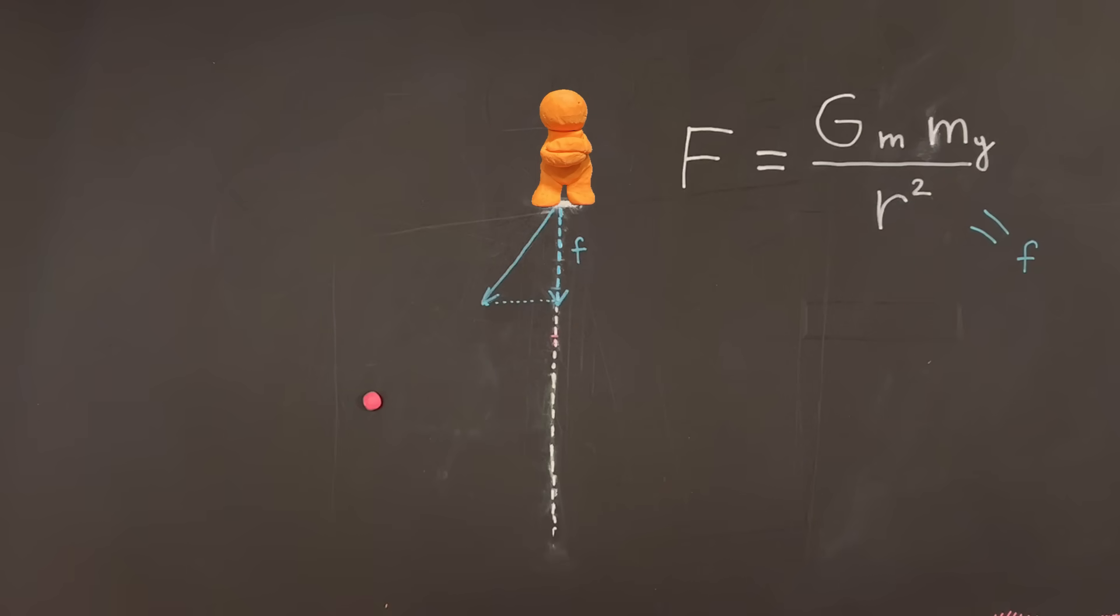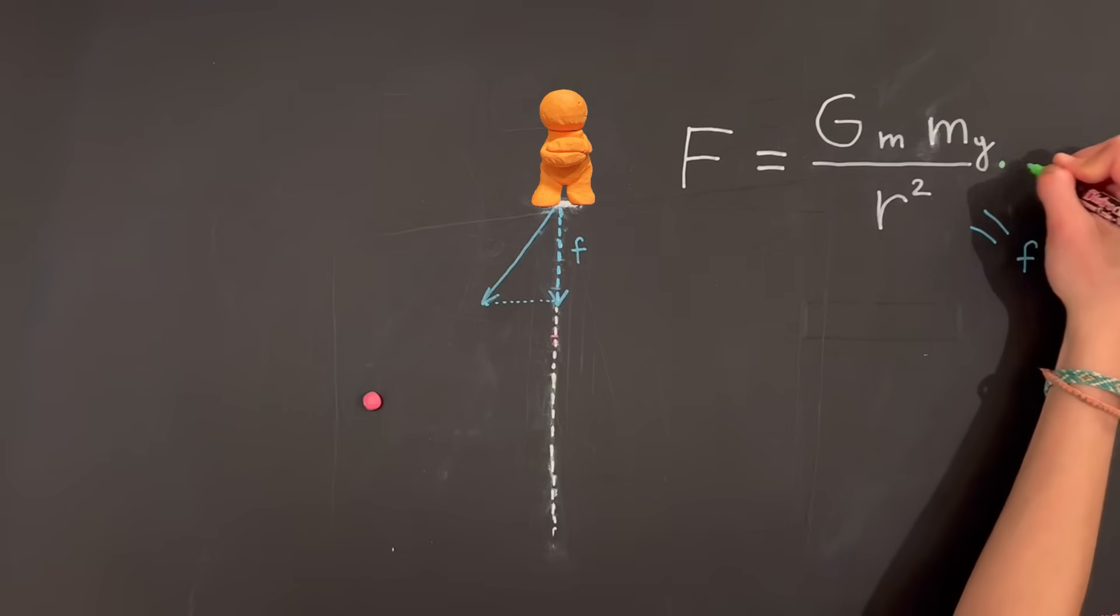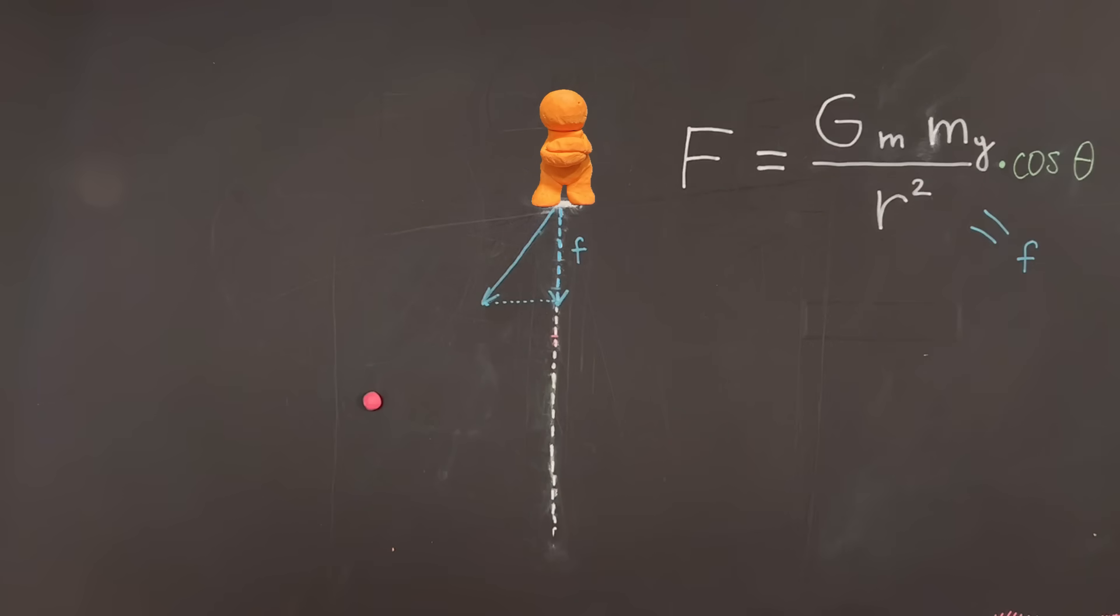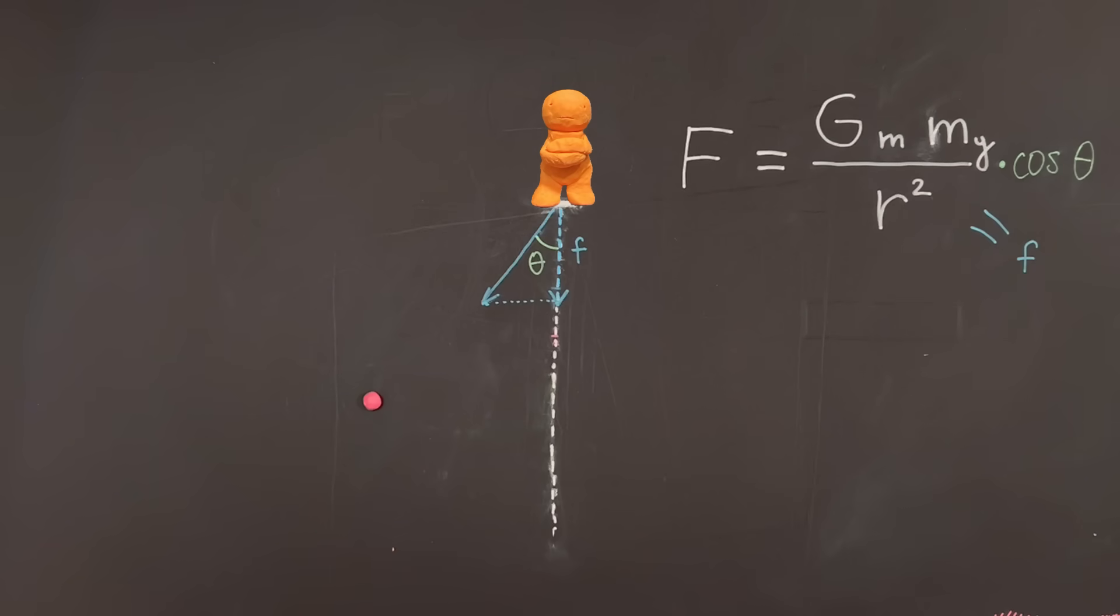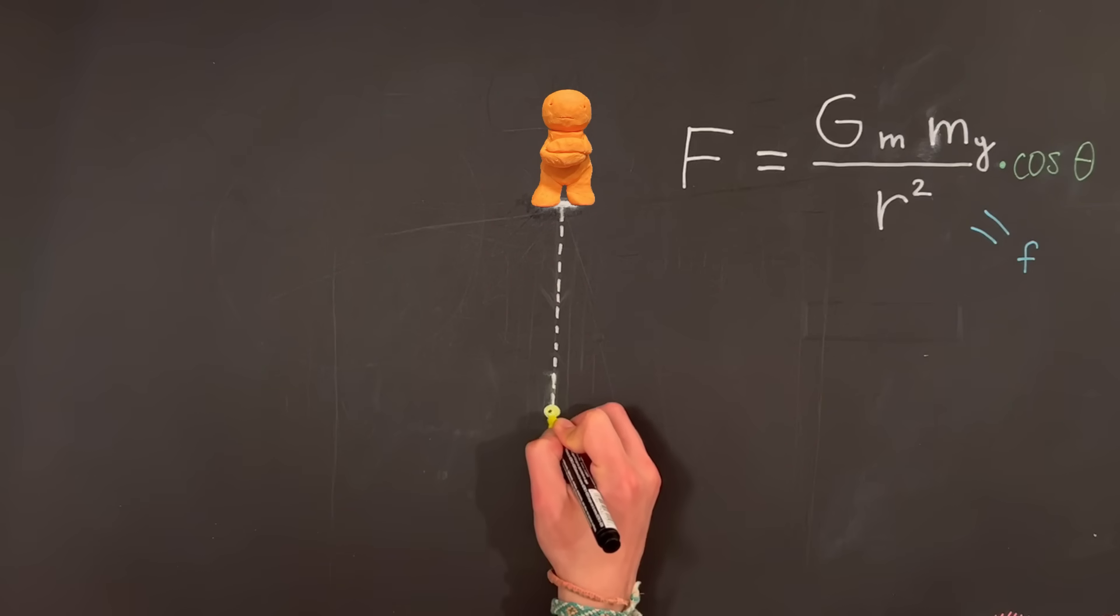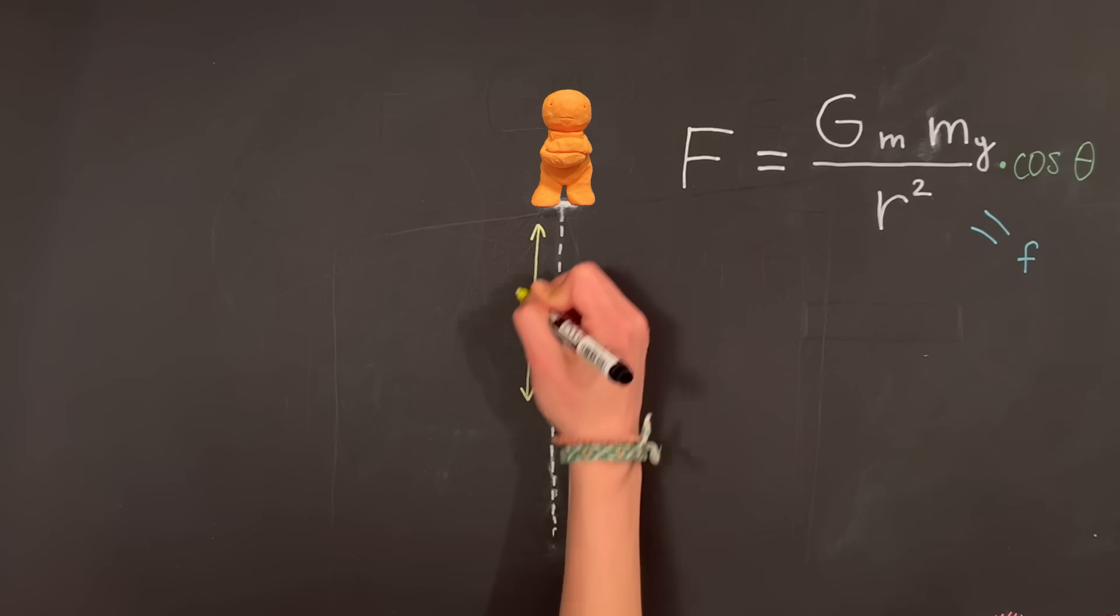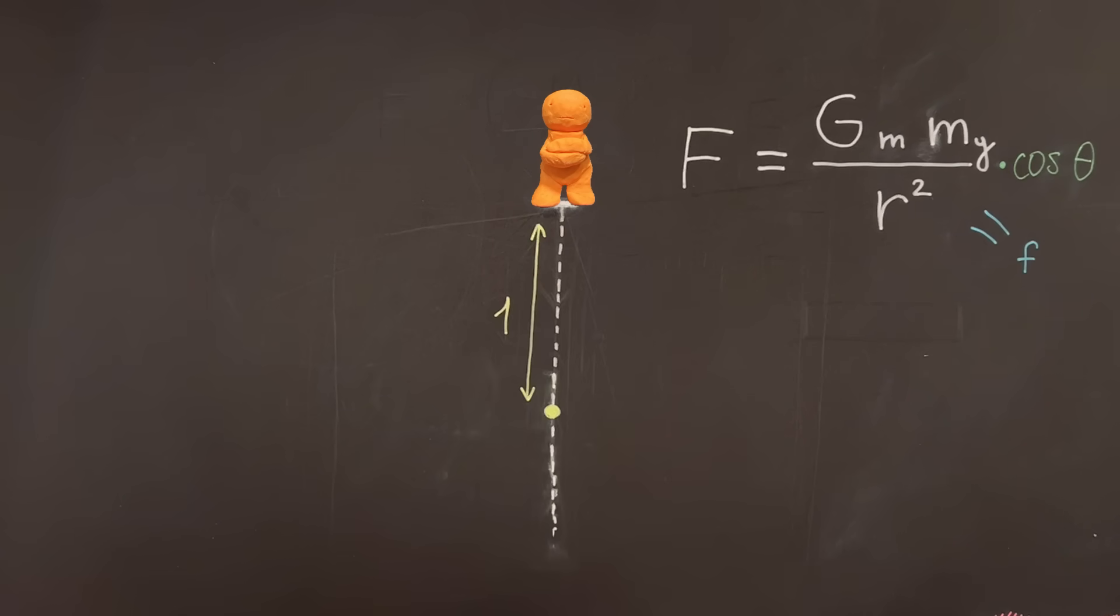Instead of considering the entire sideways force, let's take its projection onto the axis to obtain the component we're looking for. Algebraically, this translates into multiplying the left side of our equation by cosine theta. Theta being the angle between the direction of the pole and the vertical. So how do we graph this requirement? Regardless of the specific values of the constants, a single point on the vertical axis has to fit our formula. For simplicity, let's say this spot is one unit below you.